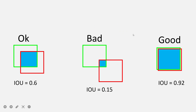Anything above 0.5 is considered okay for IOU. You can see that one example has a large intersection over union compared to the others, while another has a very low intersection. The total area — green plus red — can be very large, but if the intersection is tiny, the IOU is bad. In these examples: IOU of 0.6 is okay, IOU of 0.15 is very bad, and IOU of 0.92 is very good with almost complete overlap.